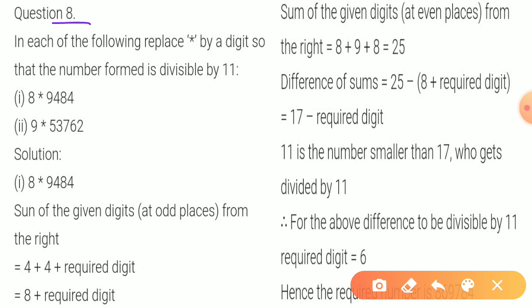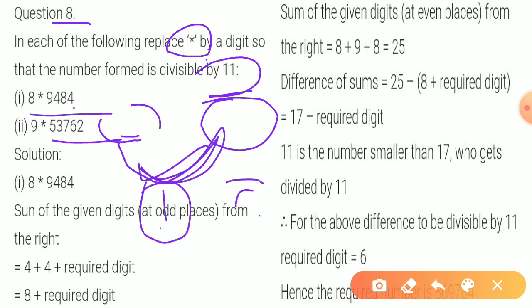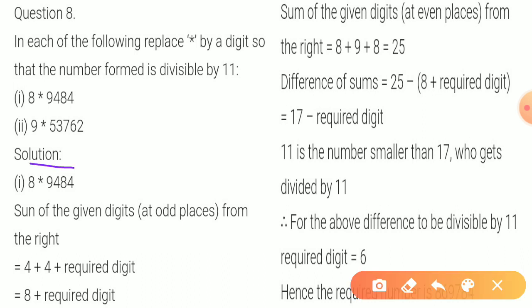Question 8: replace star by a digit so that the number formed is divisible by 11. The divisibility rule for 11 is: add all the digits at odd places, then add all the digits at even places, then find the difference between them. If the difference is fully divisible by 11 or is 0, the number is divisible by 11; otherwise it is not.